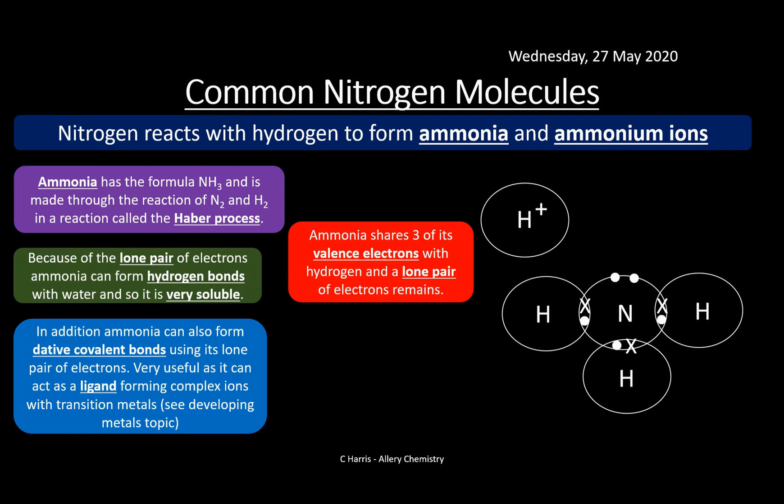In addition, ammonia can form dative covalent bonds — also called coordinate bonds — using its lone pair of electrons. A dative covalent bond is where both electrons are donated from one atom to another. This means ammonia can act as a ligand and form complex ions. You would have seen this in the Developing Metals topic.